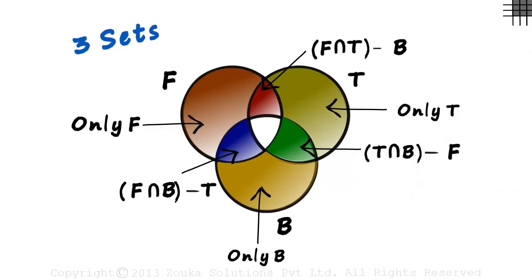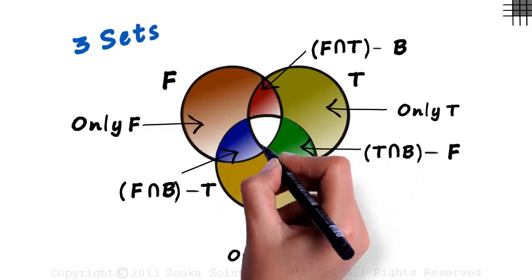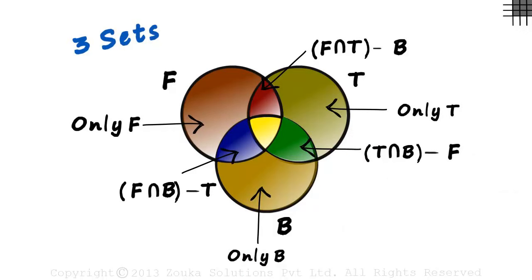And now for the most important region. This one marked in yellow. This is the region in which all three sets meet or intersect or overlap. So it is F intersection T intersection B.